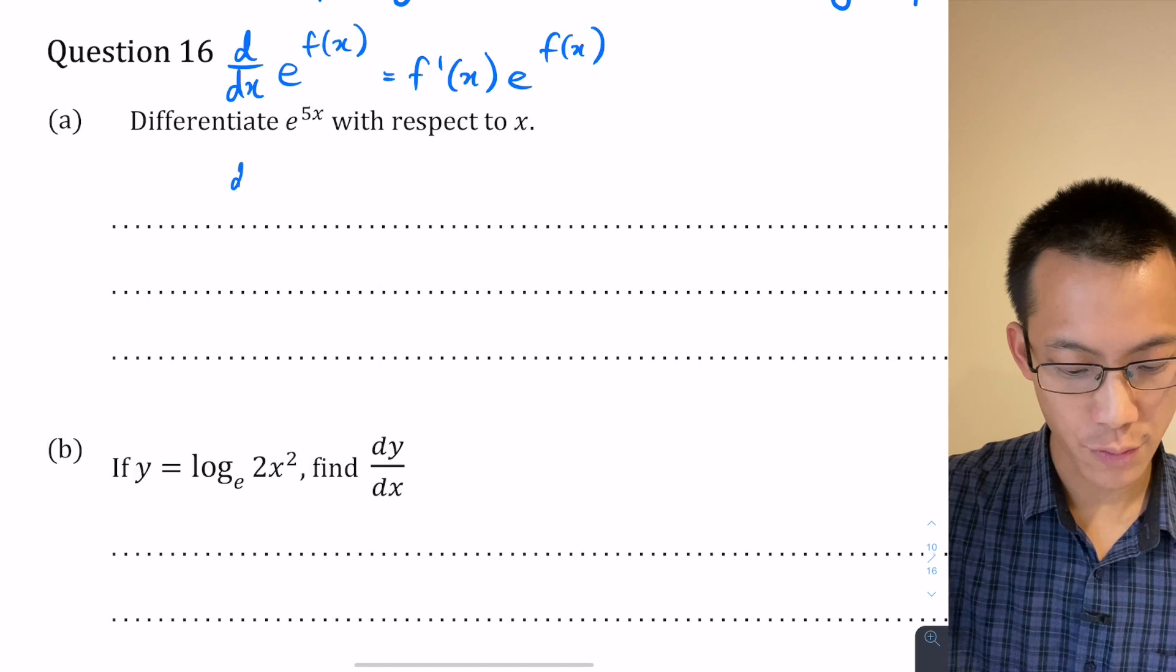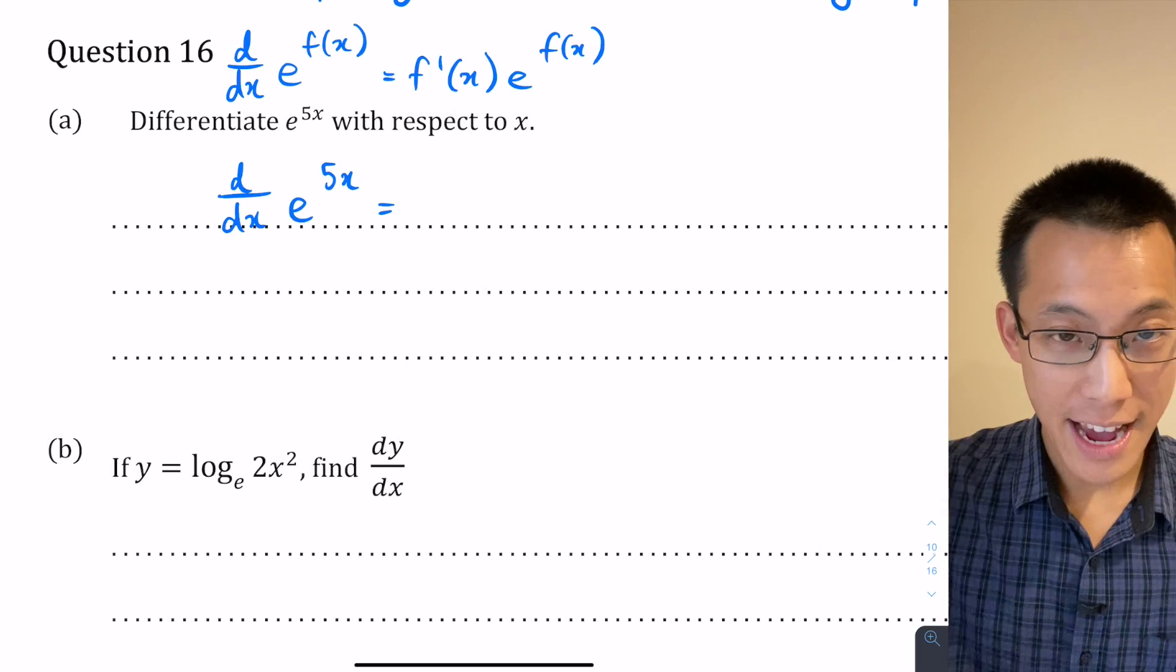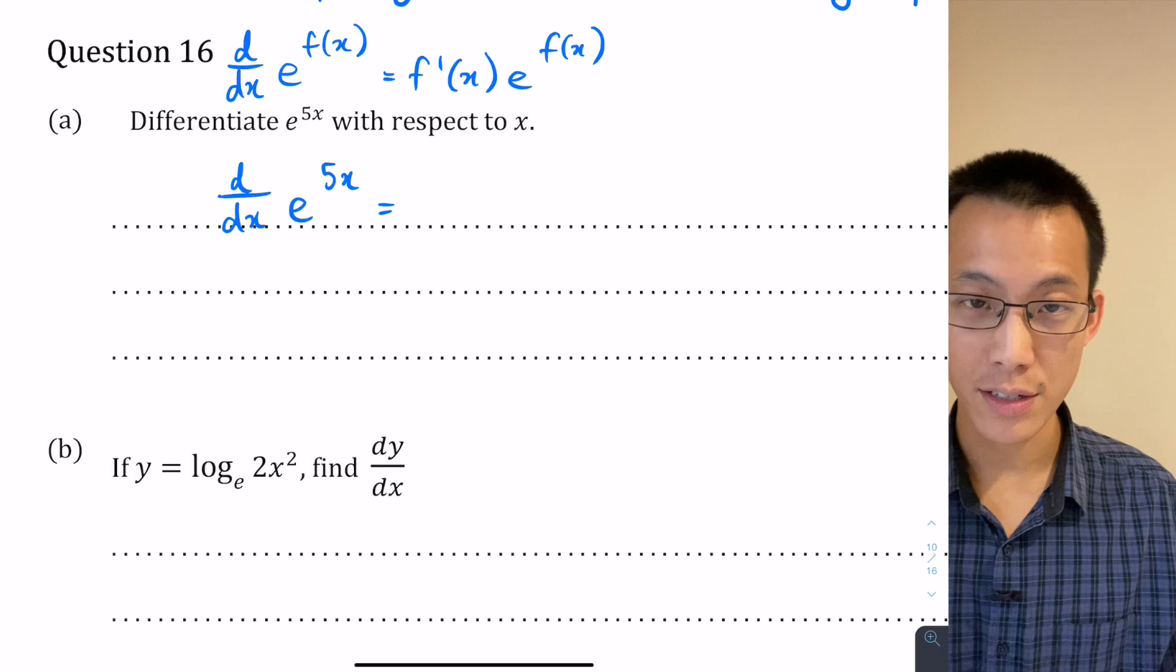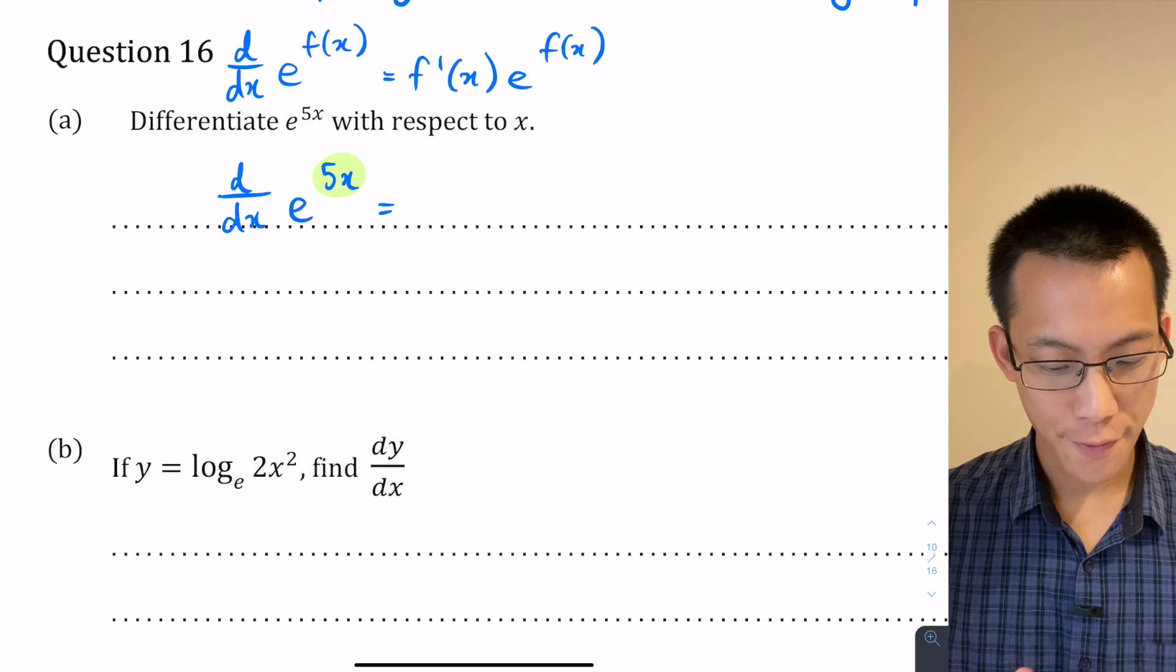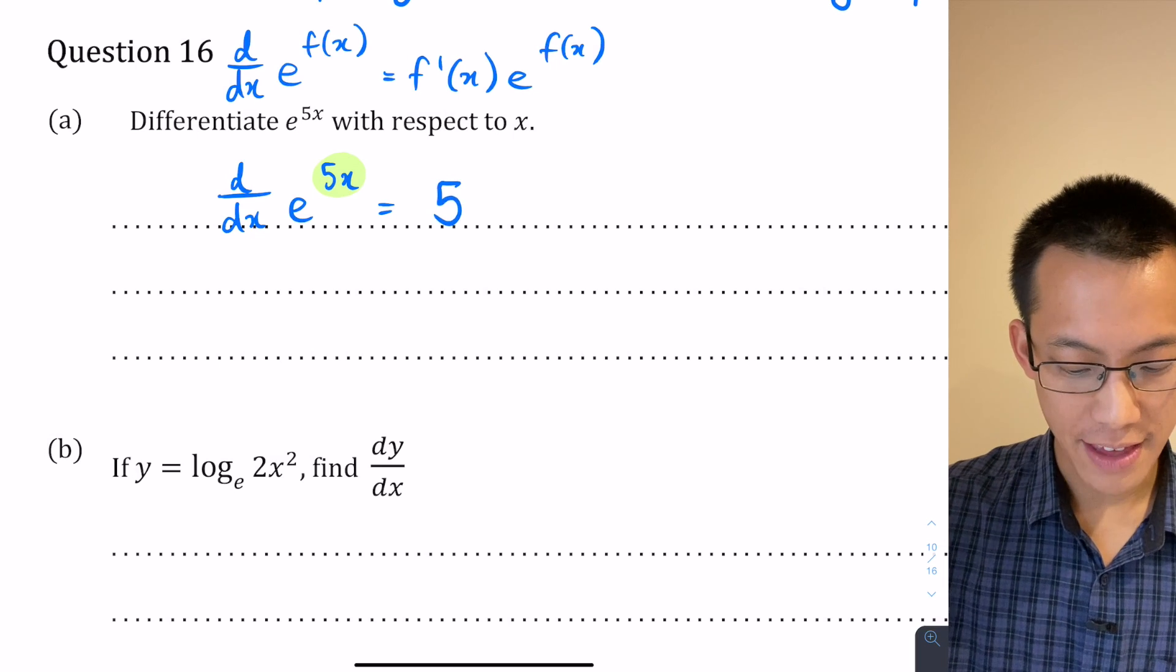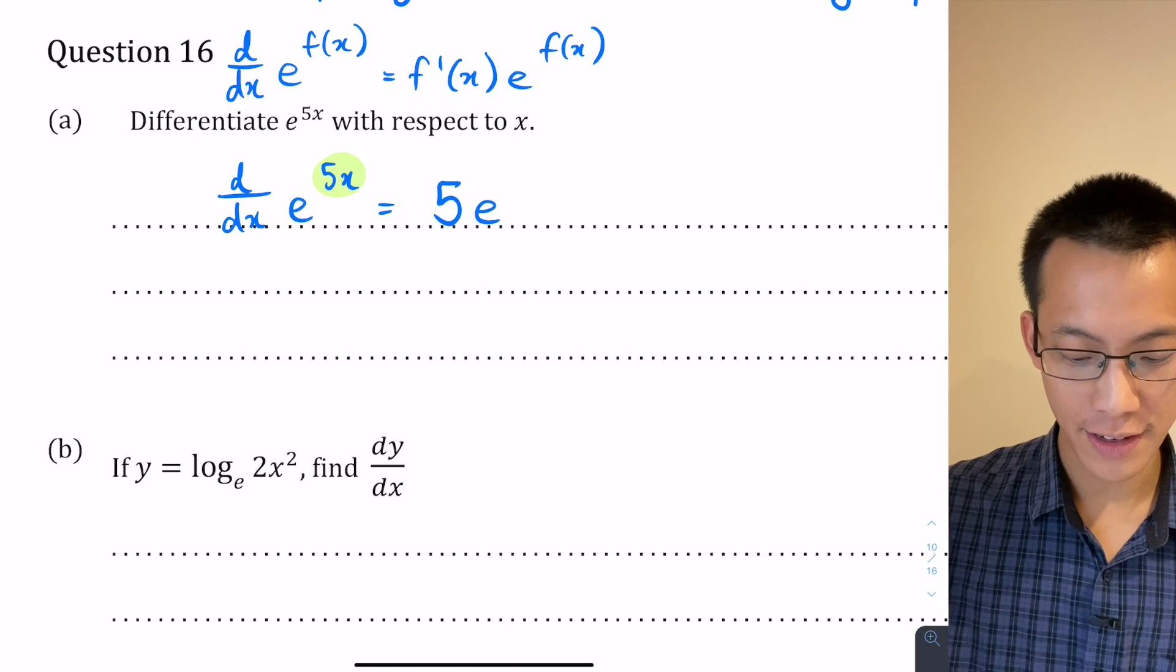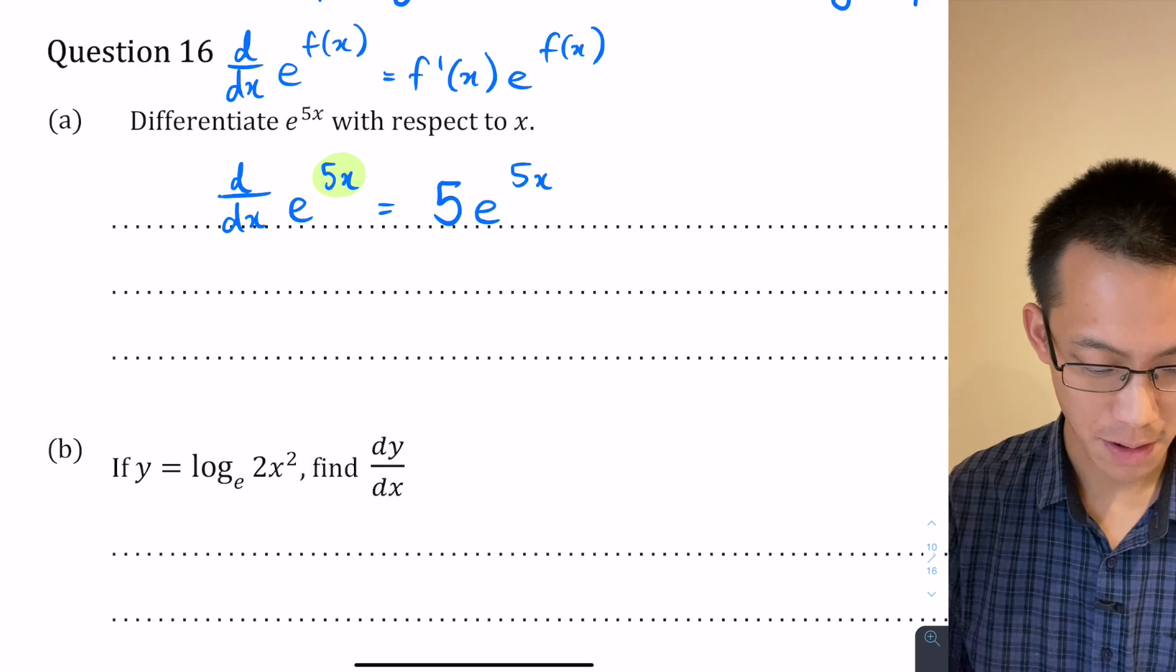So in this case the derivative of e to the 5x, my f dash in this case because f of x is 5x, because f of x is 5x then f dash x is just 5 and then I get left with e to the power of f of x which in this case is 5x. Simple question, that's why it's just the one mark.